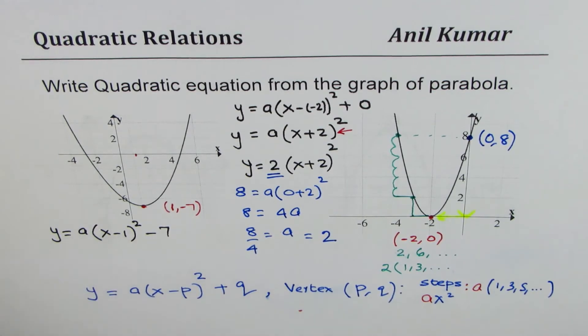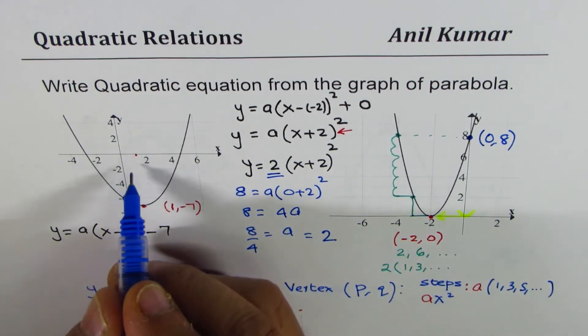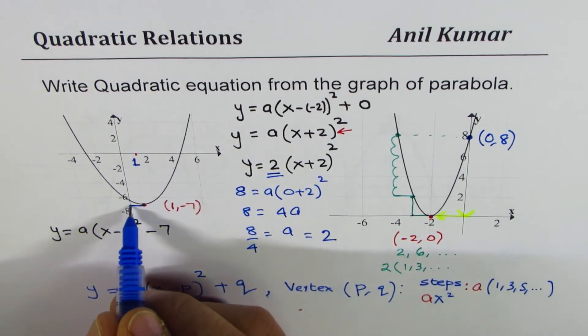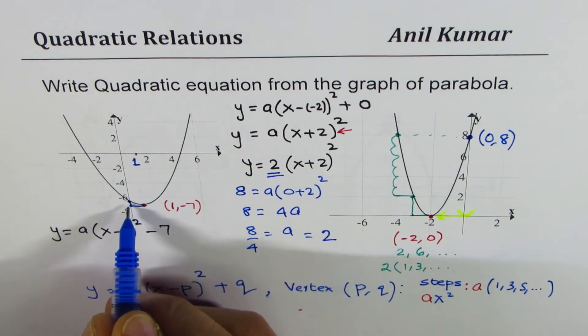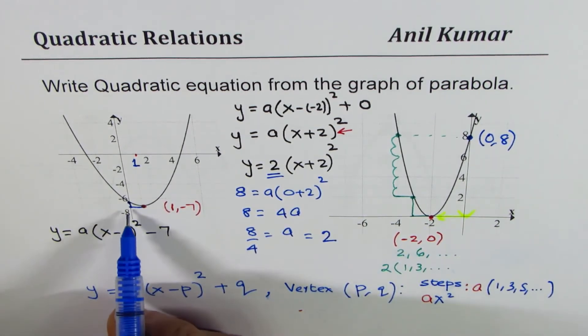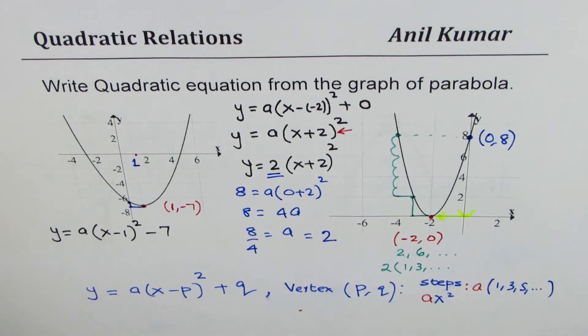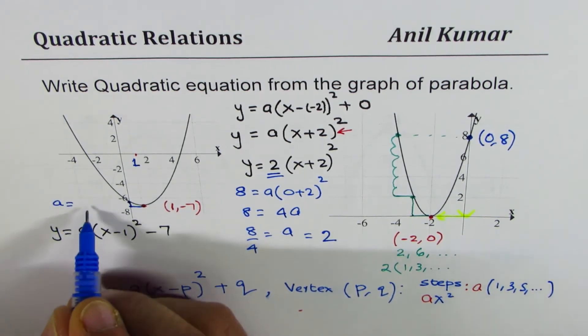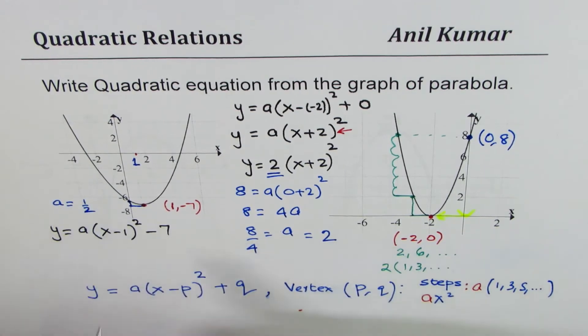To find the value of a we can look for steps. So if I move, this is 1, right? If I move a step on the left or right, how much up do we go? We go half unit up. We go half, from minus 7 we are going to minus 6.5.